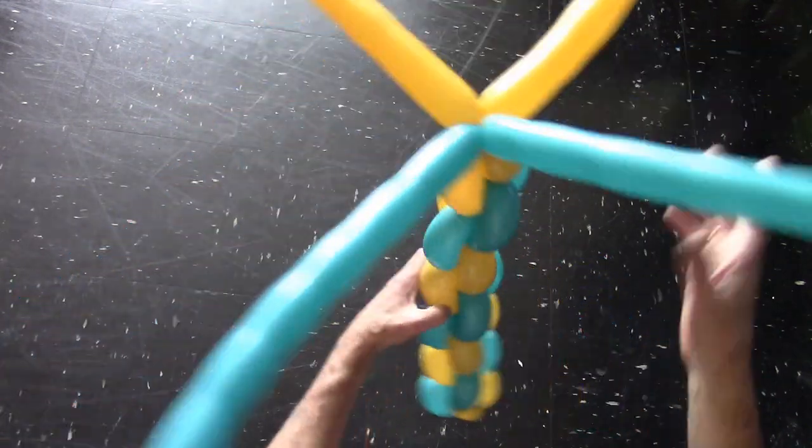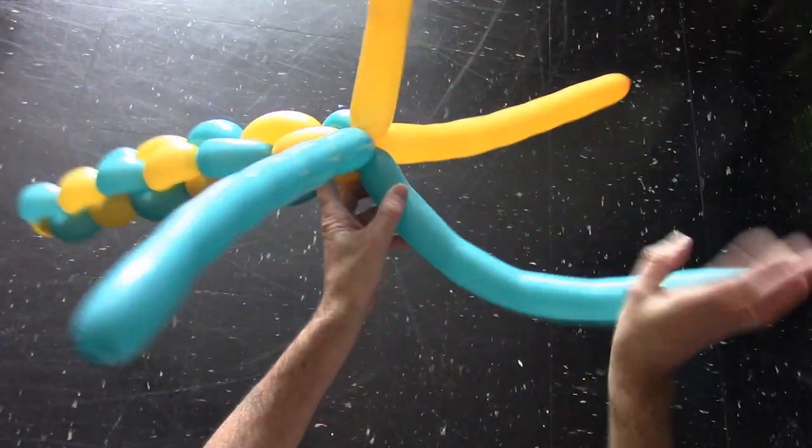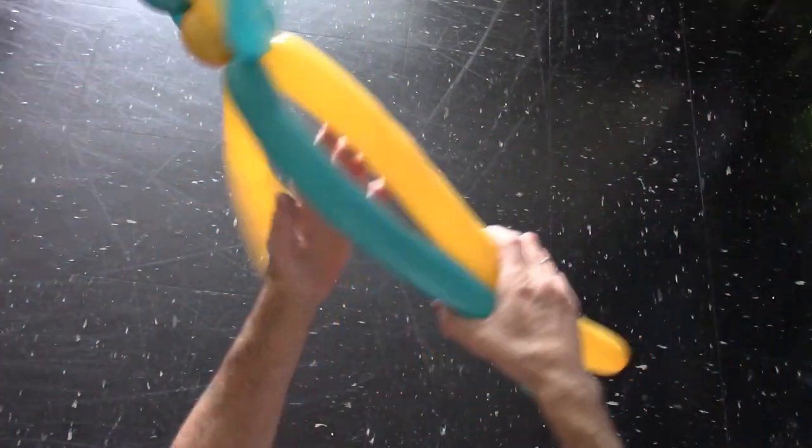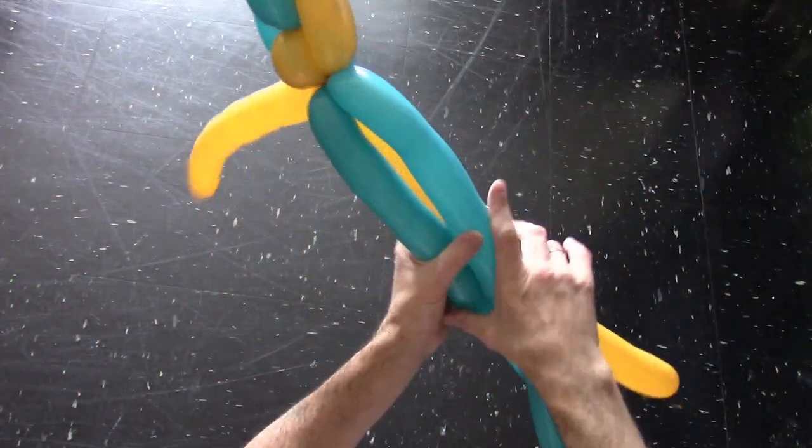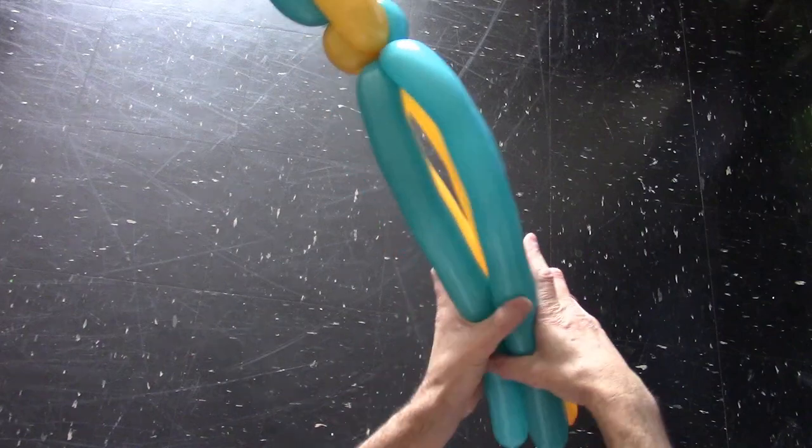We have made the stick, the body of the scepter. Now I am going to use the rest of the balloons to make the top, the head of the scepter.